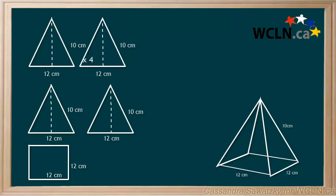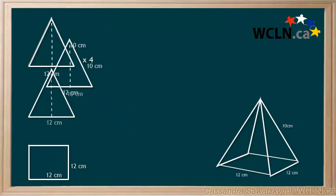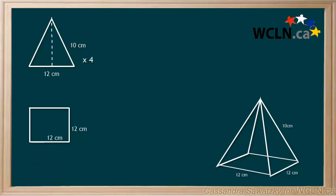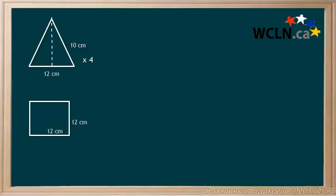In fact, all four of the triangles are the exact same. Now, we're given the side length for the triangles, but we need the height to calculate its surface area.